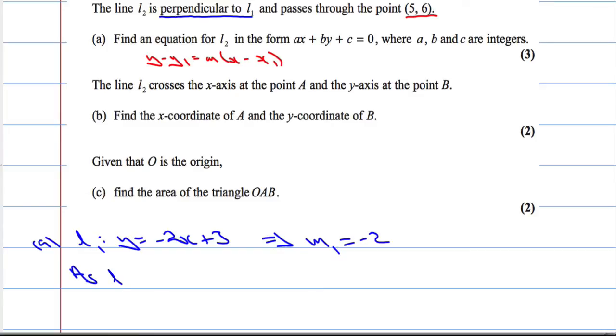Now, as L1 is perpendicular to L2, that implies that M1 times M2 is going to equal negative 1. If I multiply the gradients together, I get negative 1. That means that the gradient of L2, or M2, is going to be the negative reciprocal of that, which is 1 over 2. You might have been told to flip it and change the sign.